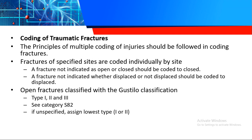Next: coding of traumatic fractures. This is very important in Chapter 19. Remember, we discussed pathologic fractures in Chapter 13. The principles of multiple coding of injuries should be followed when coding fractures. Fractures of specified sites are coded individually by site — please highlight that. We need to be very specific with the site. The default rule: a fracture not indicated as open or closed should always be coded as closed.